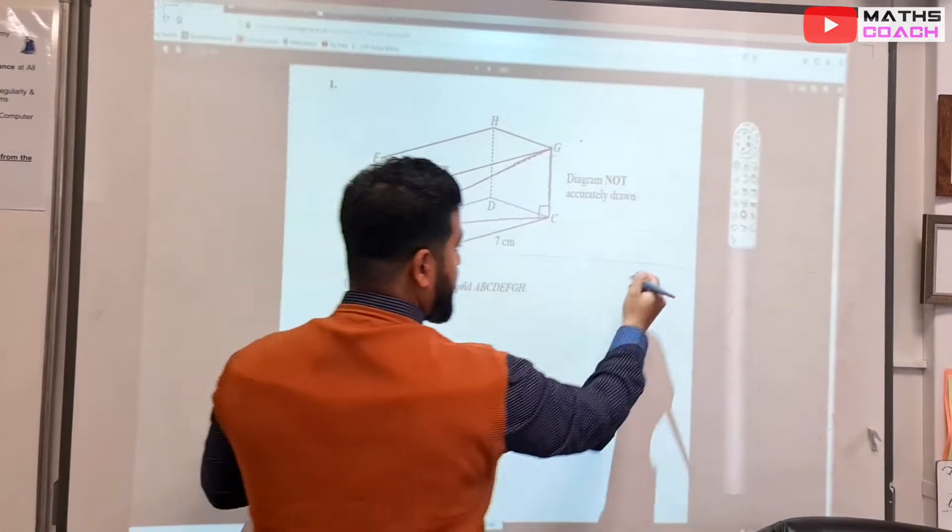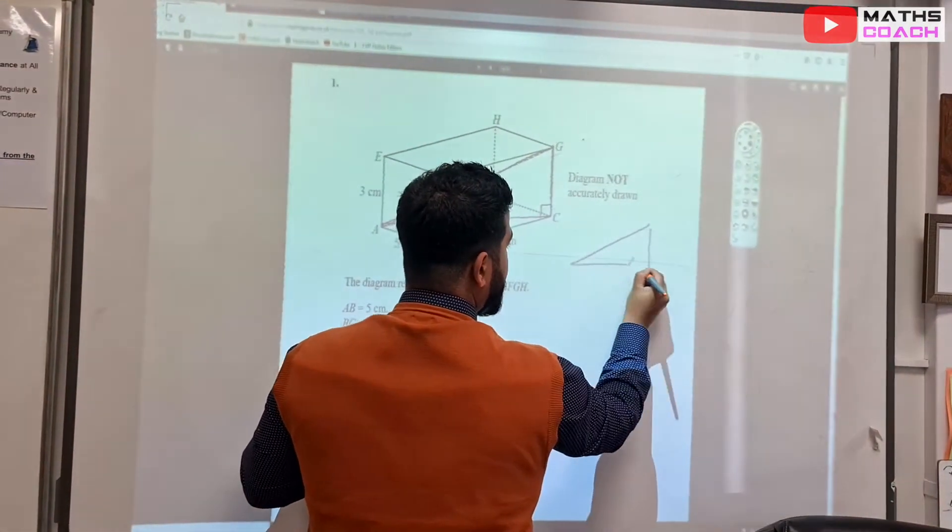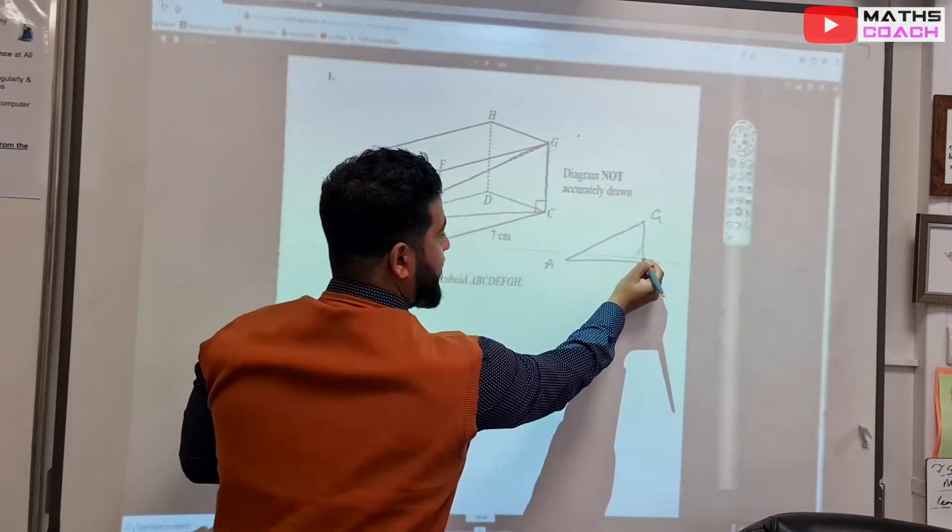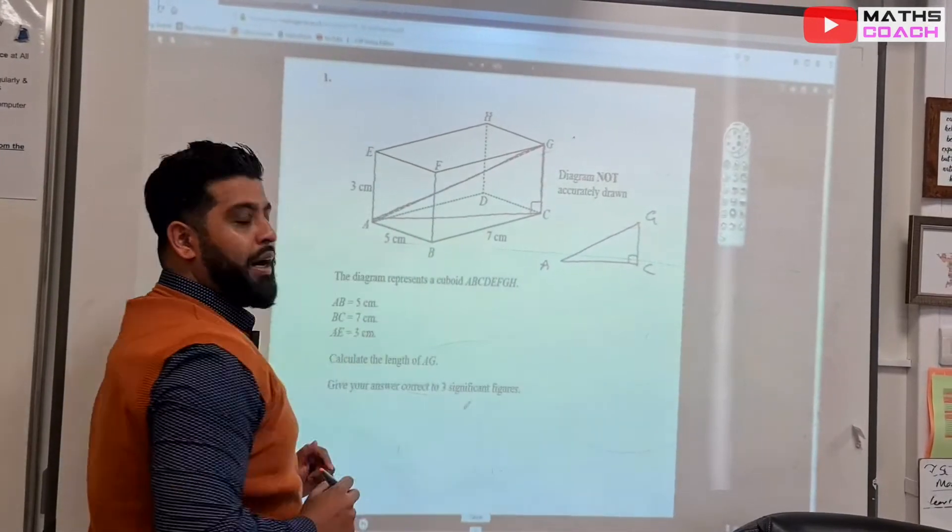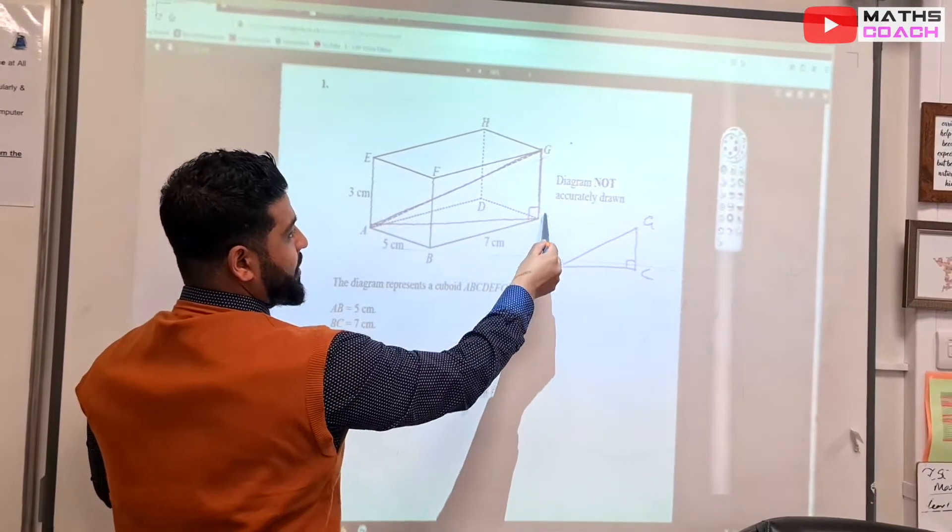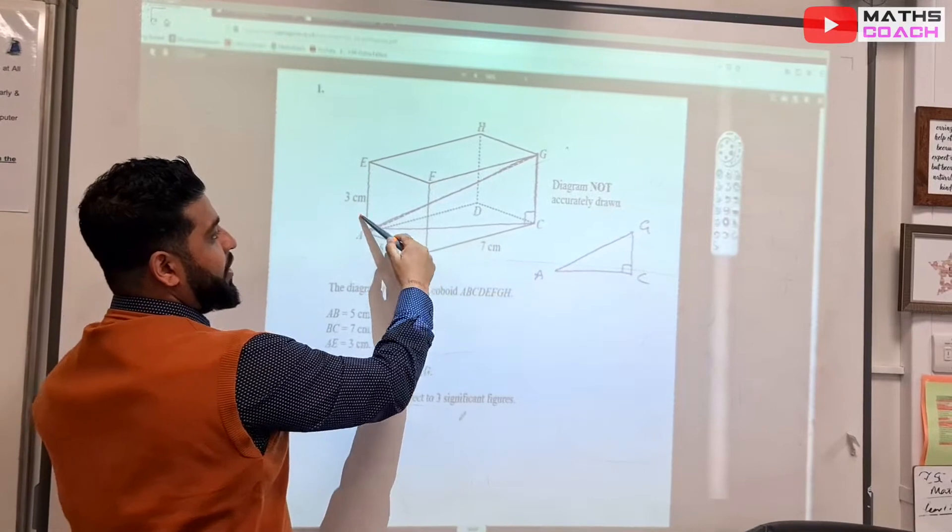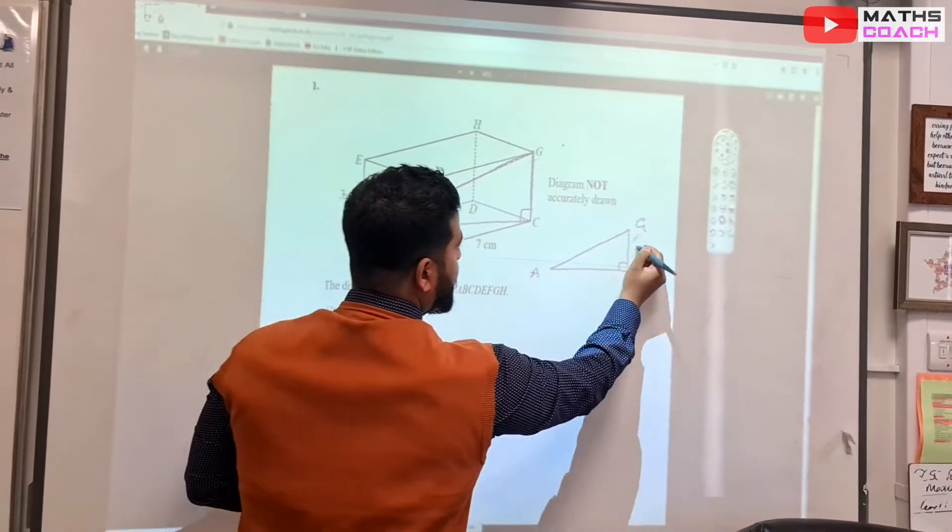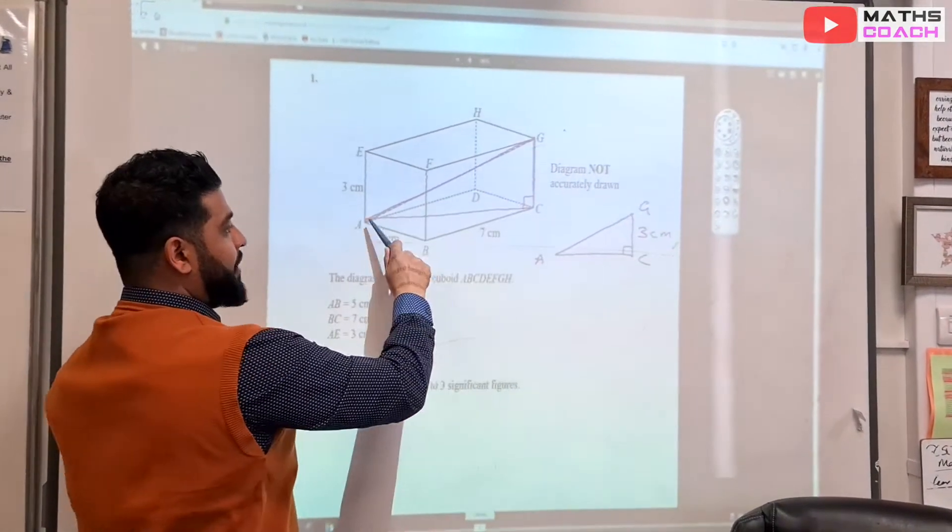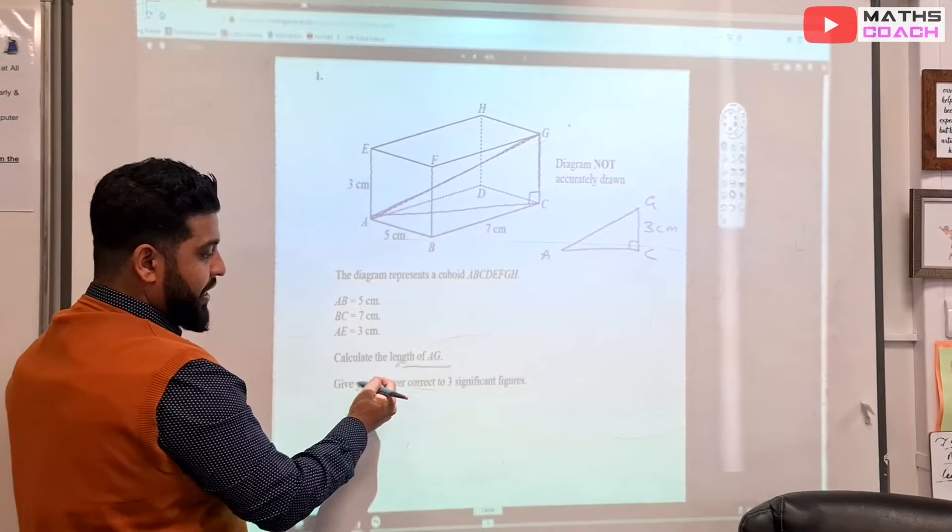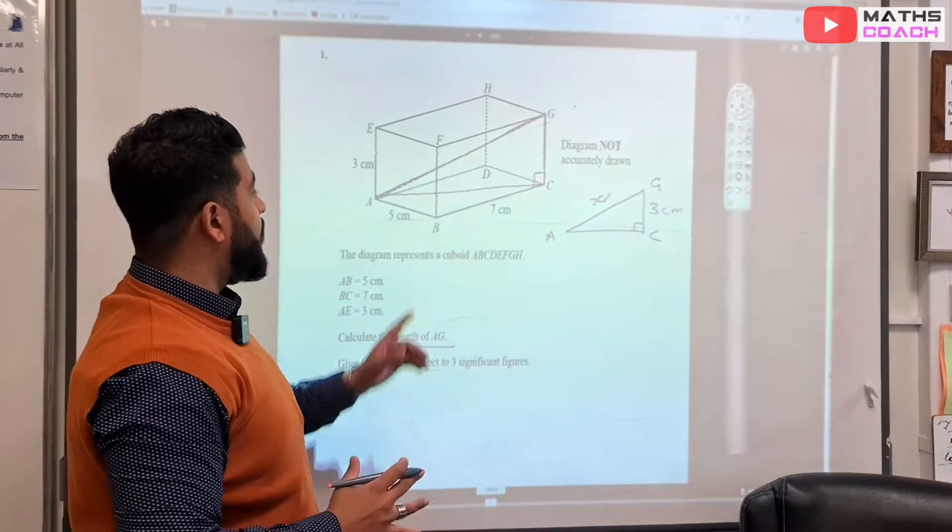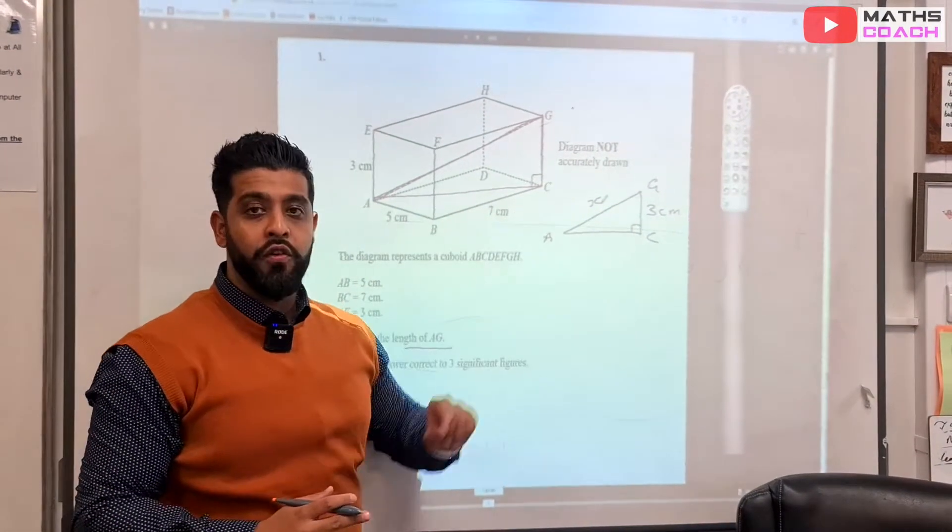Now, if we draw this right angle triangle separately, it should look like this. So if we label it A, G, and C, that should be our triangle. Now, we know the length of G and C is going to be the same as A to E because they are on opposite ends. So we can write here 3 centimeters. We are trying to work out the length of A to G. So we can give that for now an X. It's unknown. What we don't know is this length across the floor.